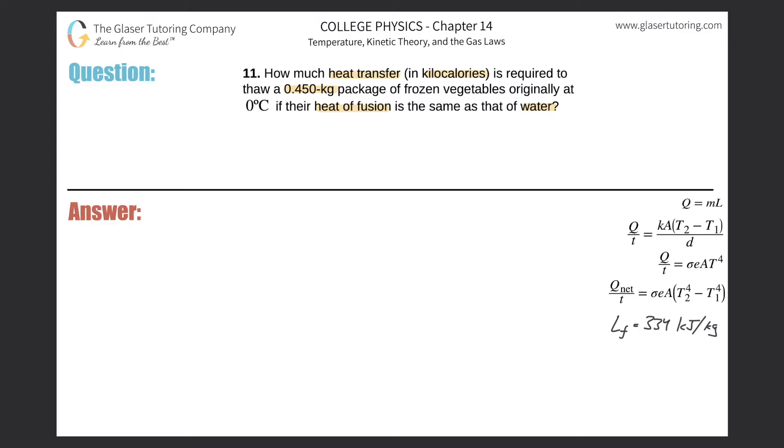When we're talking about phase changes you're going to be using this formula over here on the right hand side. It's basically saying that the heat absorbed or lost by the system is going to be equal to the mass of that particular item multiplied by the latent heat of either fusion or vaporization.